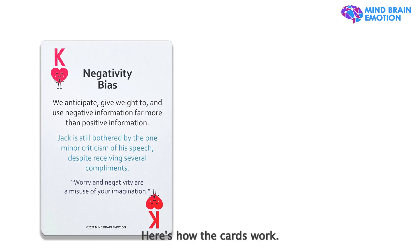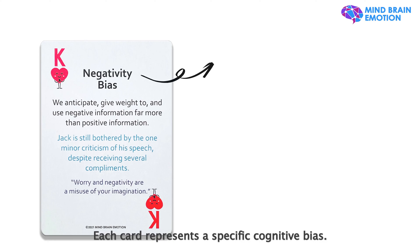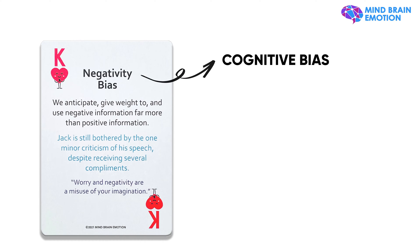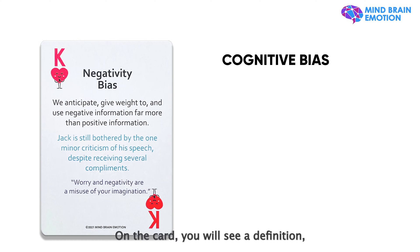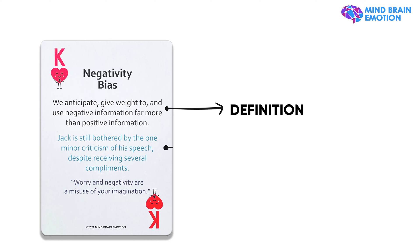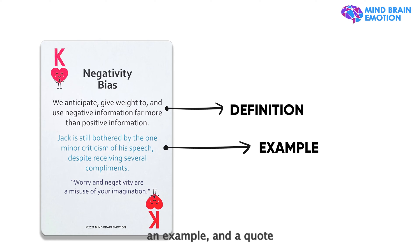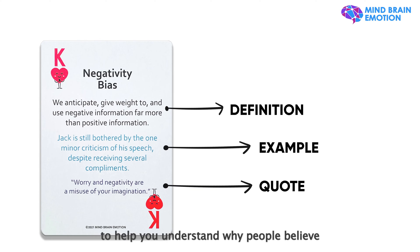Here's how the cards work. Each card represents a specific cognitive bias. On the card, you will see a definition, an example, and a quote to help you understand why people believe and behave the way they do.